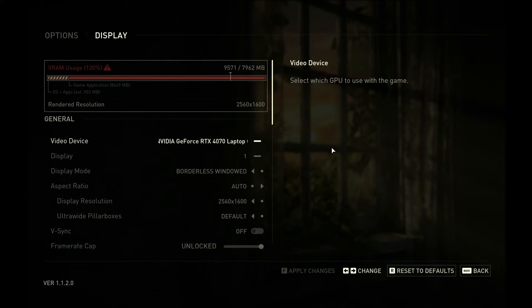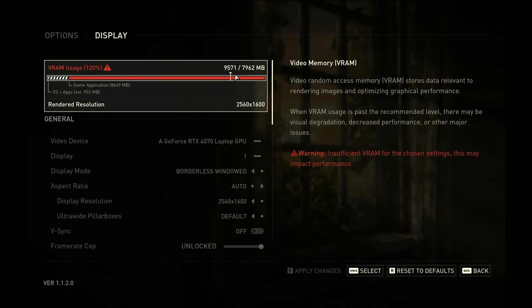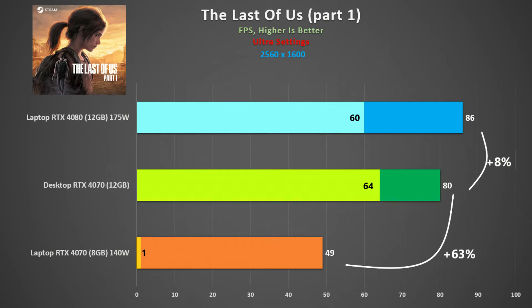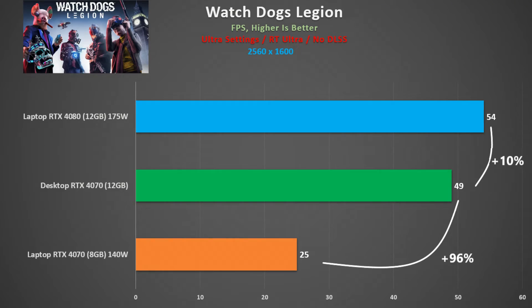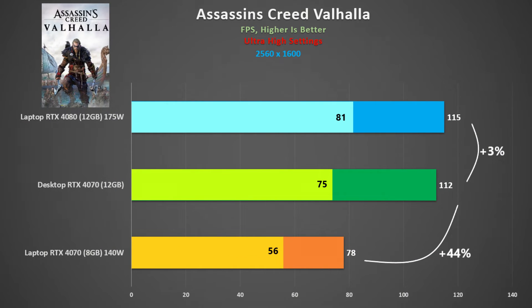The mobile 4070, with its 8GB of VRAM, hits its limit at ultra settings in The Last of Us Part 1 — it uses just about 9GB of memory, and as a result it is quite choppy. The laptop 4080 has an 8% advantage in average frame rate over the desktop 4070, but again we see it fall behind in the 1% lows. In Watch Dogs Legion, the mobile 4070 again runs out of video memory and is 96% behind the full-fat desktop 4070, whilst the laptop 4080 commands a 10% gain over the desktop card. Finally, in Assassin's Creed Valhalla, the desktop 4070 and mobile 4080 are pretty much the same, with the mobile 4070 some 44% behind.